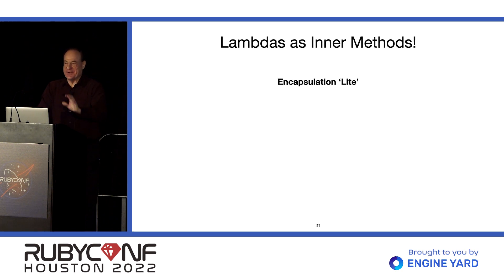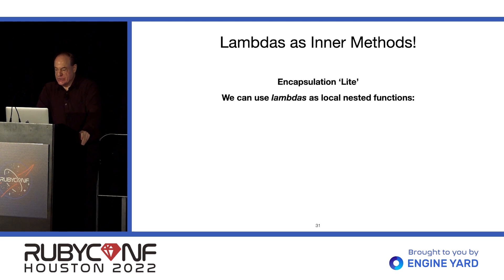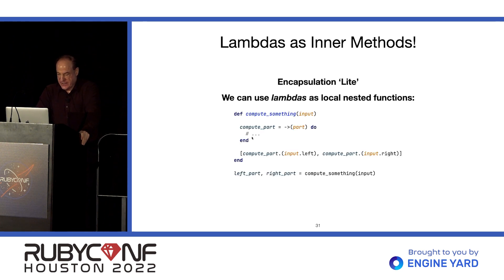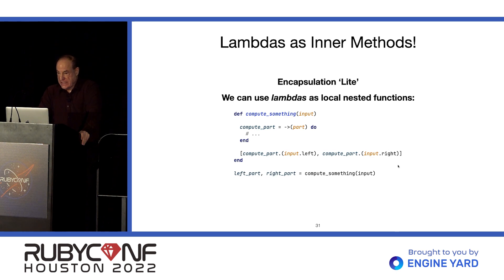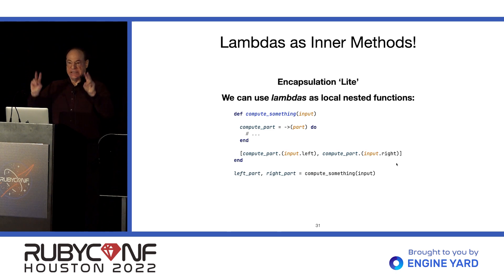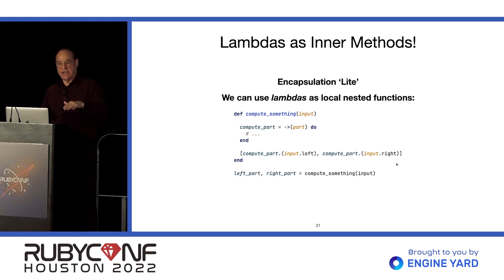We can use lambdas as local nested functions. Here we have a method where we want to apply the same computation to two parts of the input. So we create a lambda to do that computation and then call it twice. For multiple return values in Ruby, you create an array, return it, and then deconstruct it with a comma-separated list of variable names.